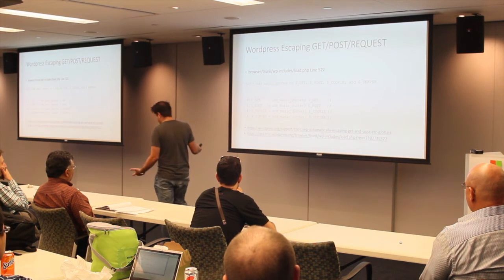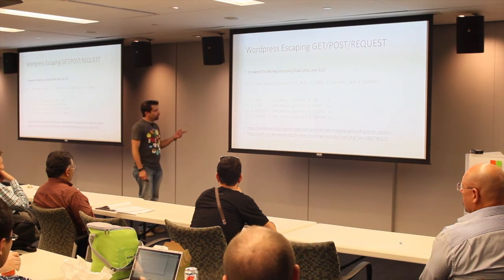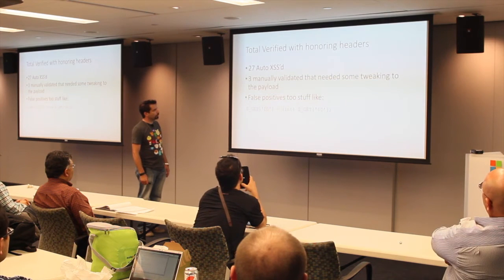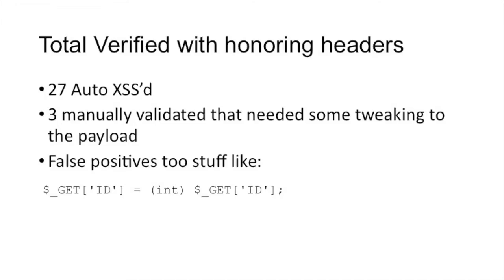This made all my stuff context-dependent. With honoring headers, I only had 27 that were automatically cross-site scripted vulnerable. I found 3 more manually, just to get a solid 30.